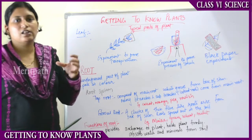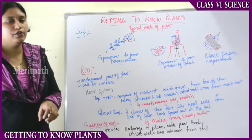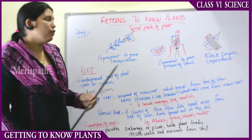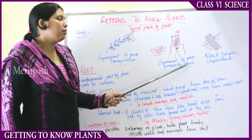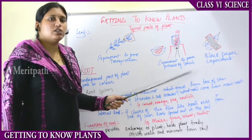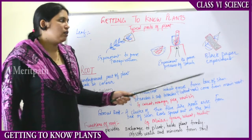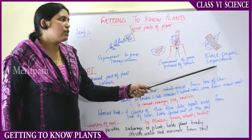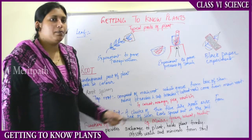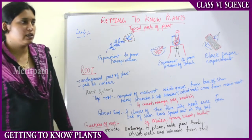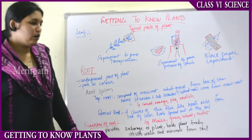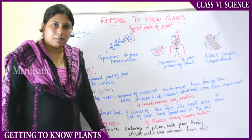The presence of blue or black color indicates the presence of starch. Starch is the food of the plant. This experiment proved the presence of starch in the leaf, thereby demonstrating the photosynthetic activity.